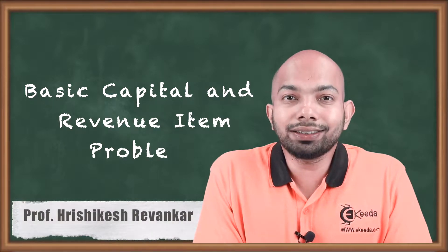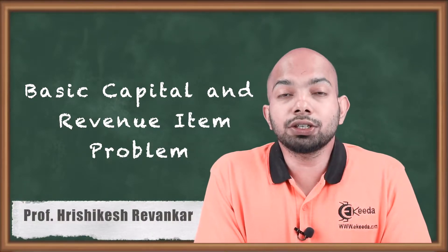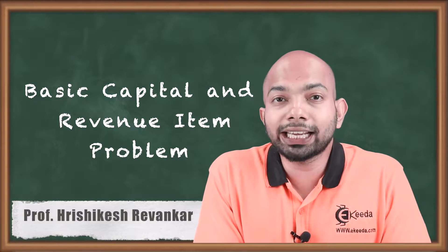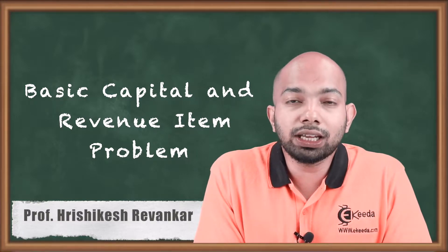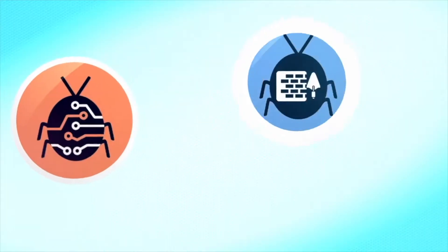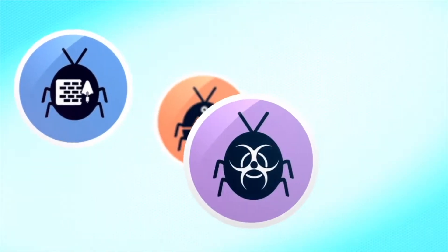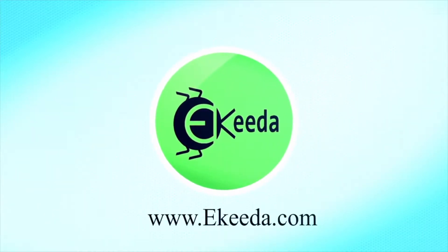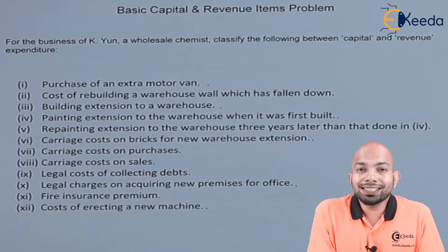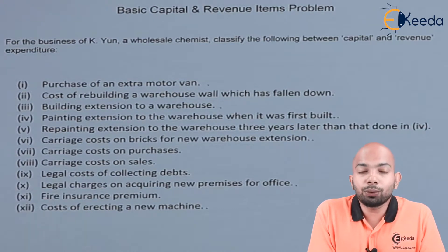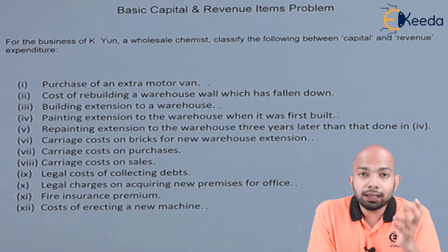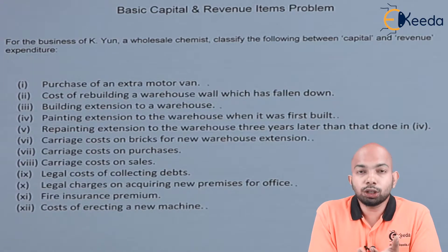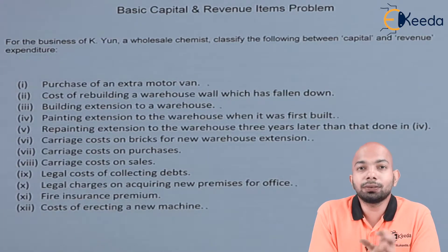Hello friends, we will be discussing certain details about the bifurcations of capital and revenue expenses and income items. There is an illustration mentioned down there and we will discuss it further. When we discuss capital and revenue items, we have already discussed the types of expenses and incomes. That means the capital item and the revenue item.